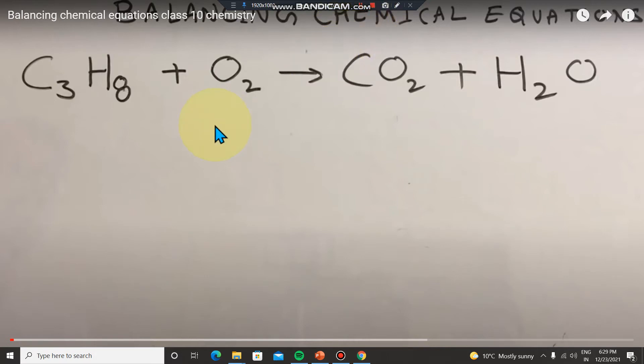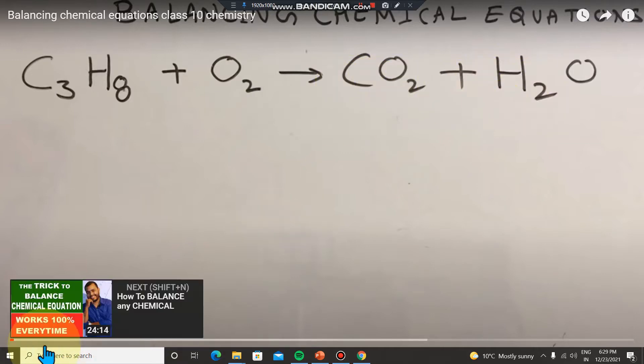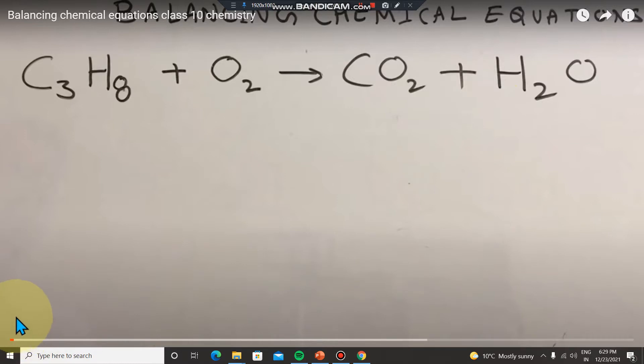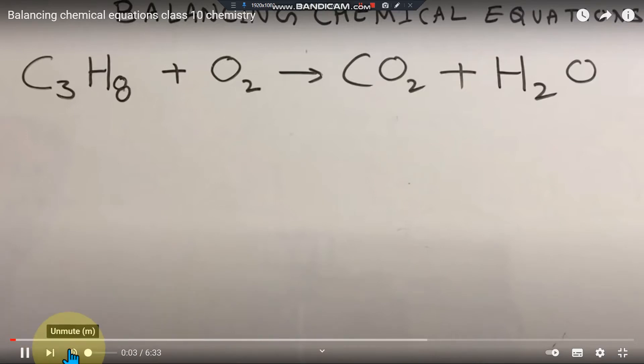Okay, I need to show you balancing chemical equations. Suppose we have this chemical equation: C3H8 plus O2, and the products are CO2 carbon dioxide and water. Okay, so how do we balance this equation? Let me explain the process.